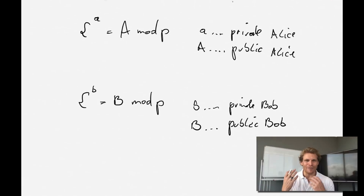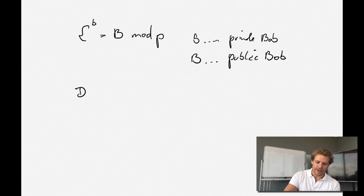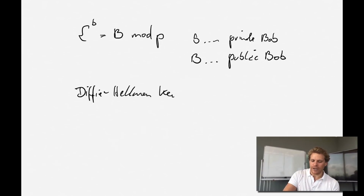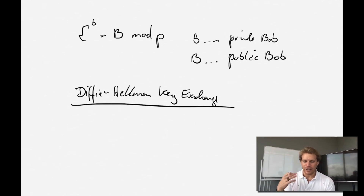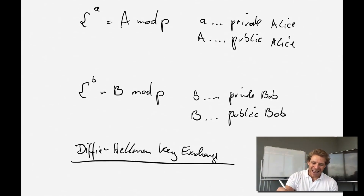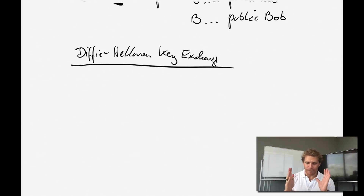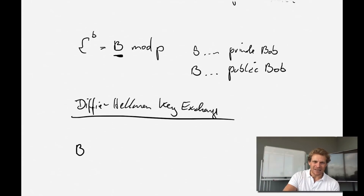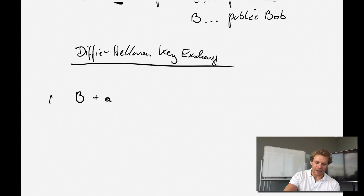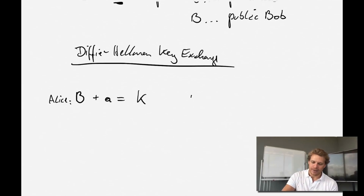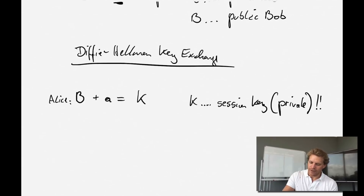Here's where it gets very interesting: we have the Diffie-Hellman key exchange, which is something very popular and publicly used. What happens is Alice gives Bob her public key A, and Bob gives Alice his public key B. Alice takes capital B raised to her private key a, and they derive what's called a session key K — and that session key must stay private.